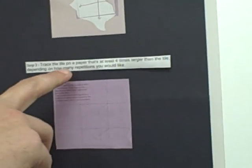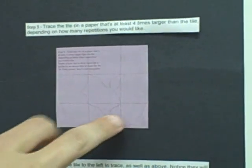Your step three, you're going to trace the tile on a piece of paper that's four times larger than the tile, depending on how many repetitions you would like. So you can just trace this on a piece of paper, graph paper if you want, and just repeat the step over and over. You see each side is going to lock in with the opposite side, so it should work.